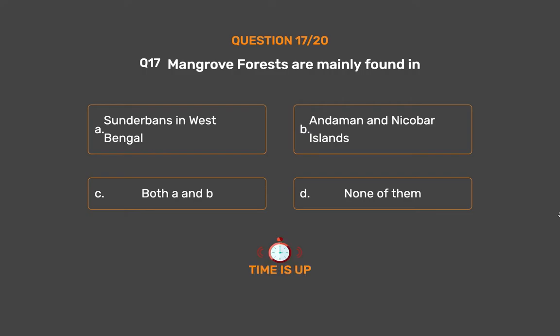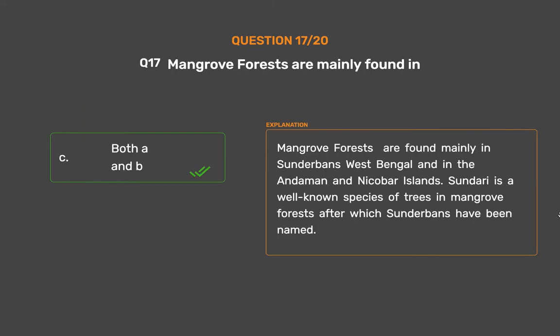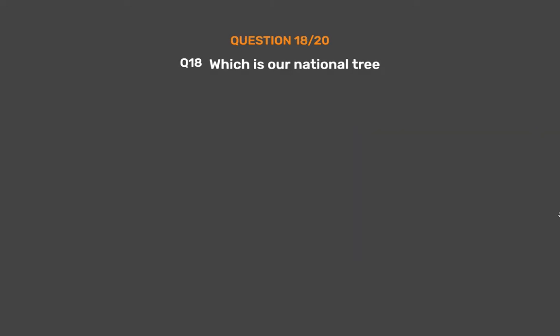The correct answer is Option C: Both A and B. Mangrove forests are found mainly in Sundarbans, West Bengal, and in the Andaman and Nicobar Islands. Sundari is a well-known species of trees in mangrove forests, after which Sundarbans have been named.